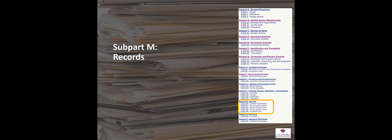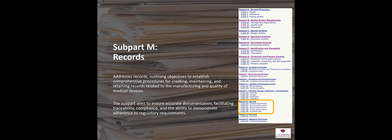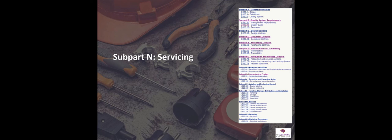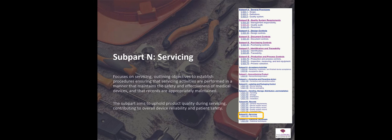Sub-part M covers records. You will produce lots and lots of records for the quality management system — you might need to produce them if there's a product recall, or show them as evidence of things you've done when you're being audited. So you need to control all those records, and the requirements for that are found in sub-part M. Sub-part N covers servicing. If you have a produced medical device that has to be serviced, the requirements for that are found in sub-part N.